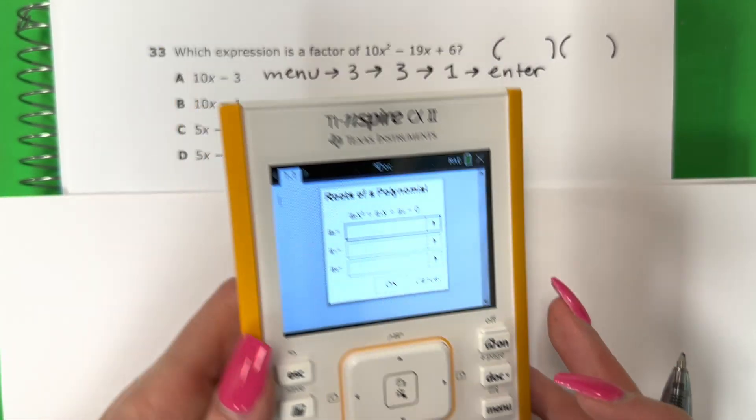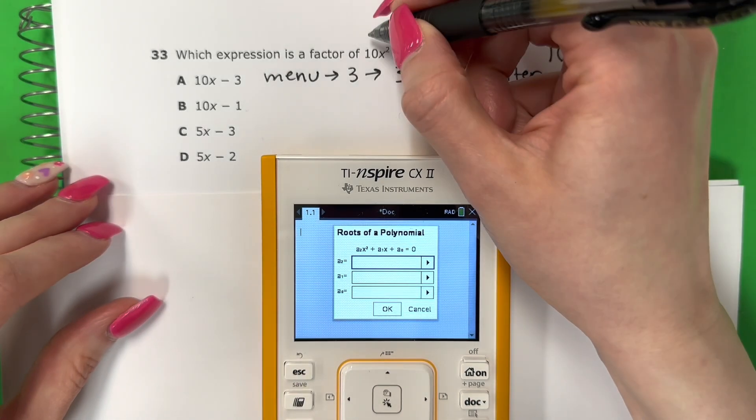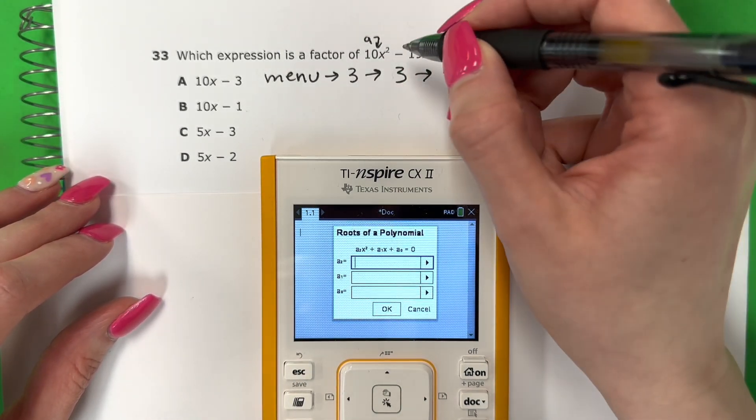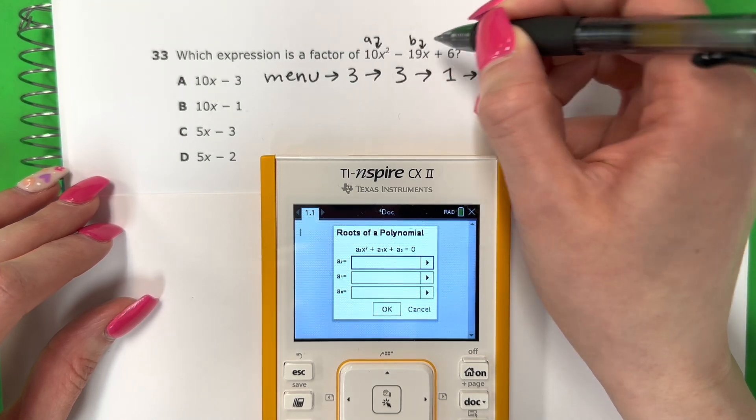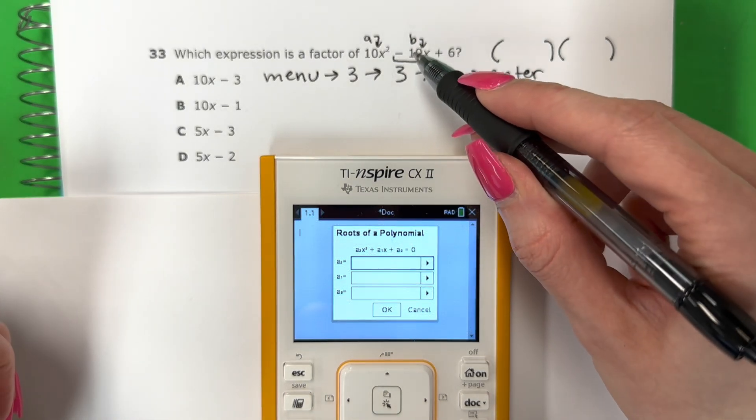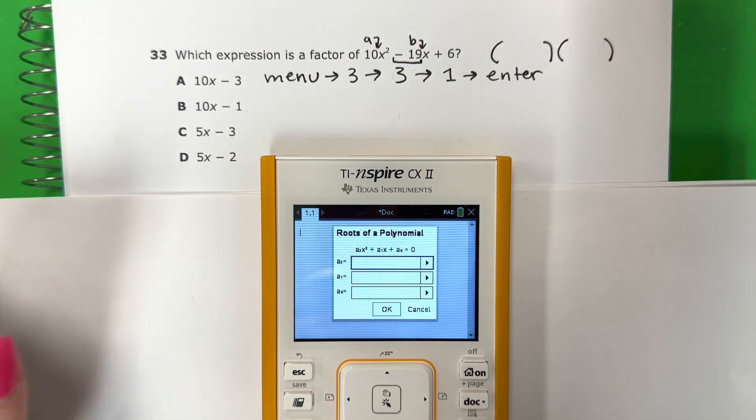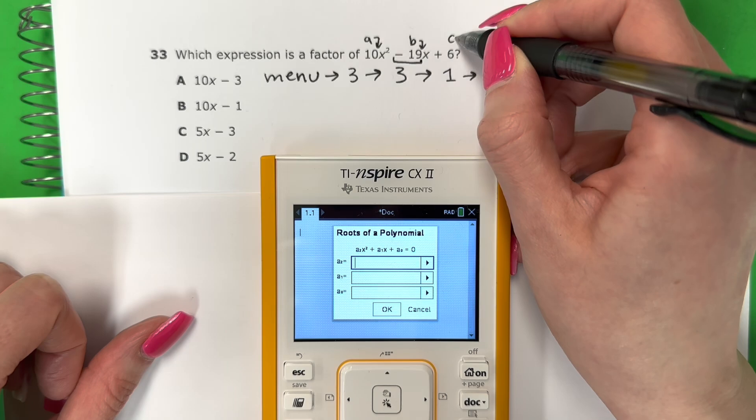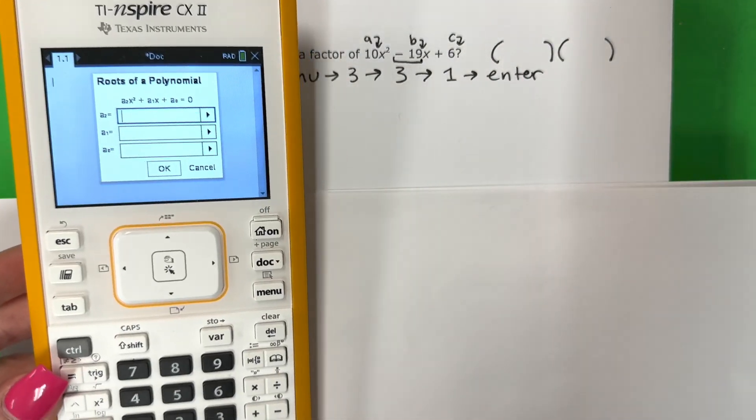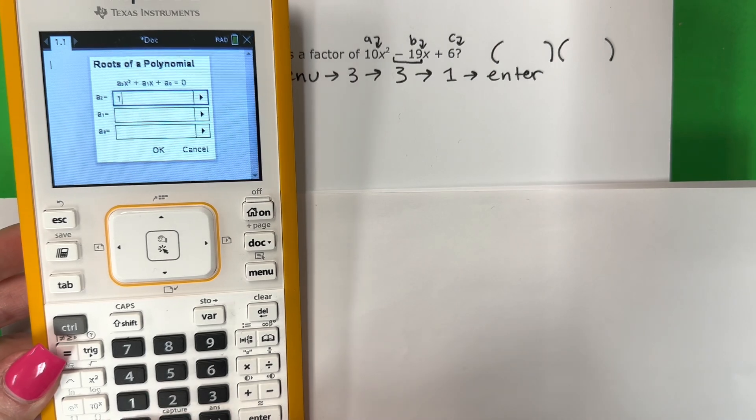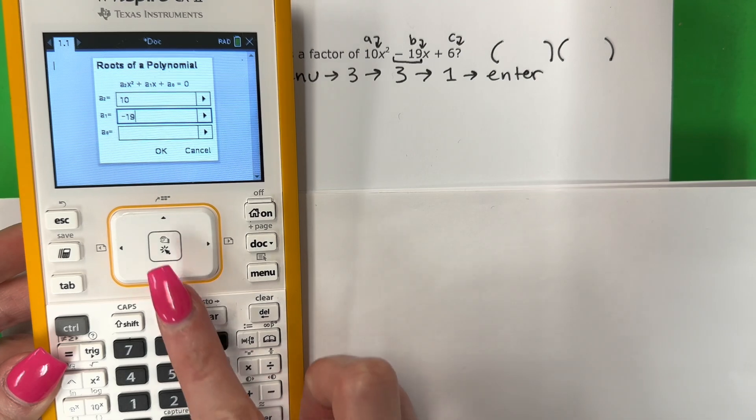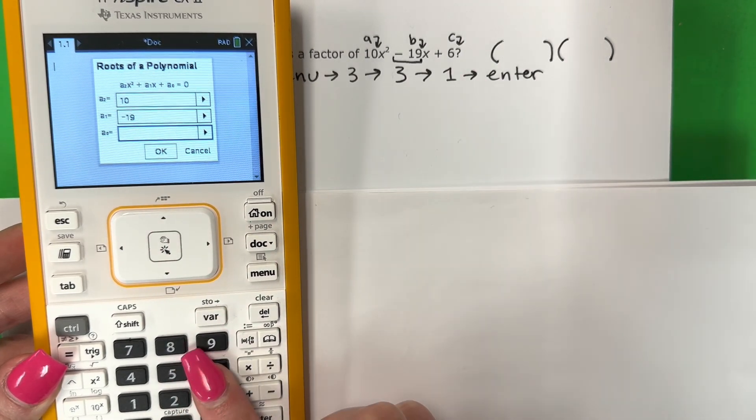You're going to put your ABCs. Las ABCs. So A is the number with the x squared. A es el número con x cuadrado. B is the number with the letter no exponent. B es el número con la letra sin exponente. This is negative 19. Es negativo 19. And C, C, is no letter. Sin letra. Six. So A is 10. Diez. No letters here. B is negative 19.